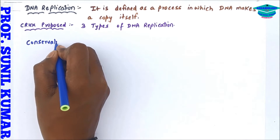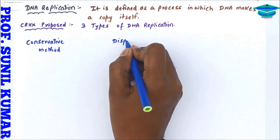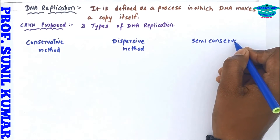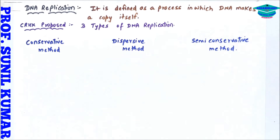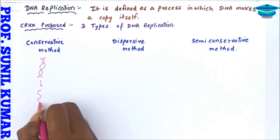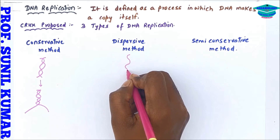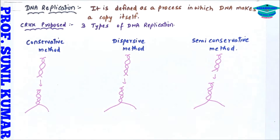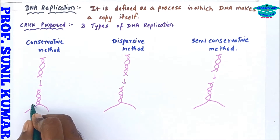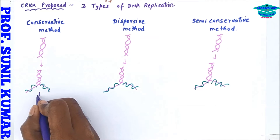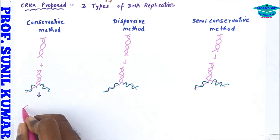Crick proposed three types of DNA replication — there can be any one possibility out of three. One is the conservative method, second is the dispersive method, and third is the semi-conservative method. In the conservative method, the parental DNA remains conserved. In the dispersive method, the parental and new DNA mix with each other. Semi-conservative means half.